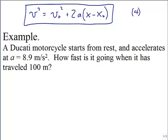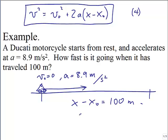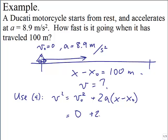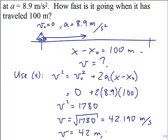Example using equation 4: A Ducati motorcycle starts from rest and accelerates at 8.9 m/s². How fast is it going after traveling 100 meters? Initial velocity is 0, acceleration is 8.9 m/s², distance is 100 m. Using equation 4: v² equals 0 plus 2 times 8.9 times 100 equals 1,780. Taking the square root gives v equals 42.190 meters per second, rounded to 42 m/s.